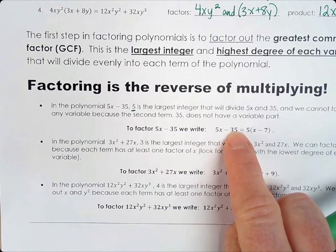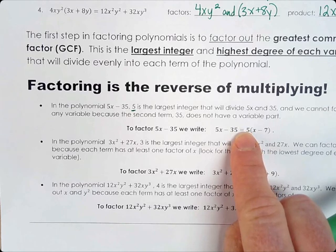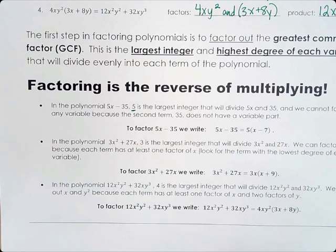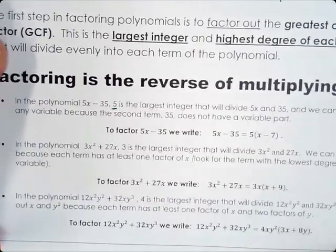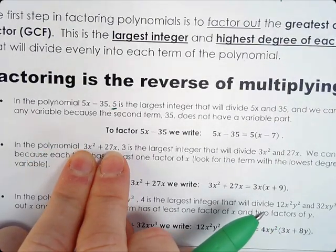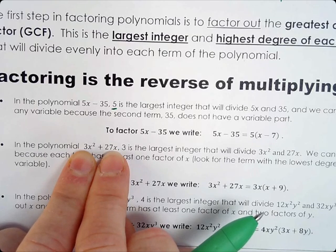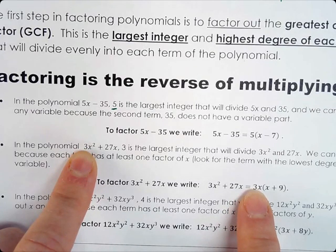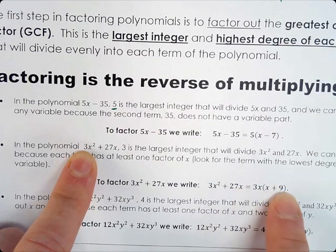Then we look at how to get minus 35 if we have 5 times something — 5 times negative 7 gives negative 35. The next one is 3x squared plus 27x. They have the 3 in common, and they also have an x in common, so 3x is the GCF. We pull it out, then 3x times what gives 3x squared? It'd have to be x. And 3x times what gives 27x? It'd be 9.